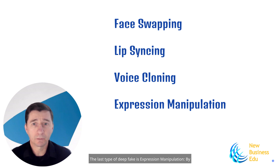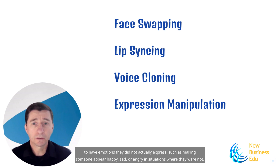The last type of deep fake is expression manipulation. By manipulating facial expressions, creators can make individuals appear to have emotions they did not actually express, such as making someone appear happy, sad, or angry in situations where they were not.